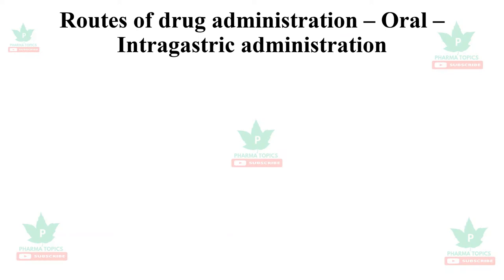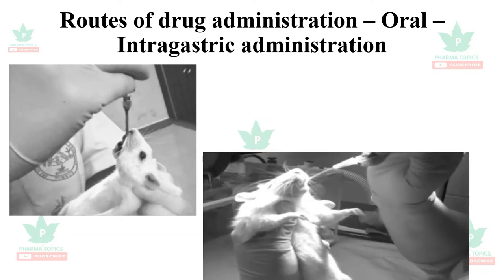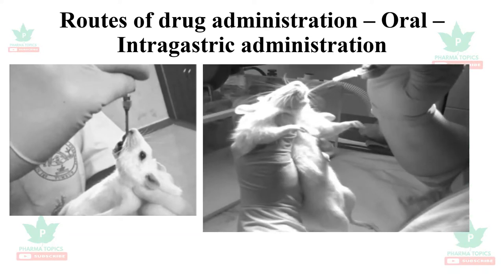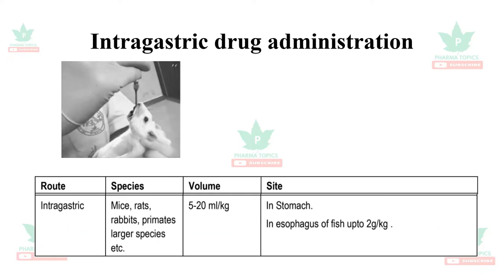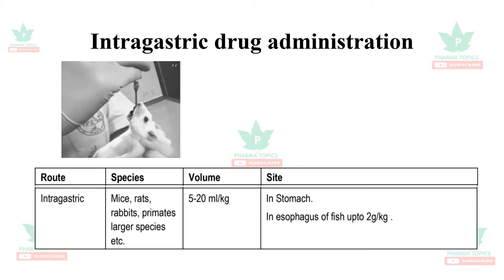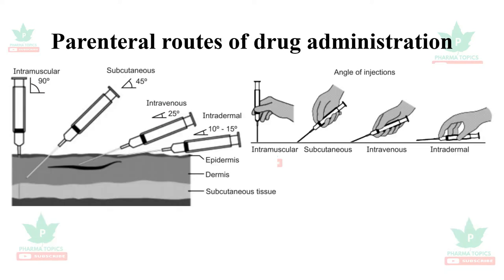Let us see the routes of drug administration. First is intragastric administration. It can be administered in a volume of 5 to 20 ml per kg in mice, rats, rabbits, primates, and even larger species. The drug reaches the stomach, and the maximum volume can reach up to 2 grams per kg in case of fishes.